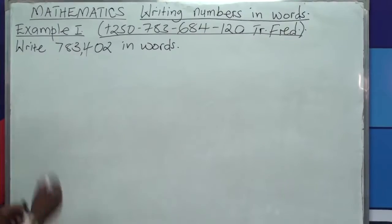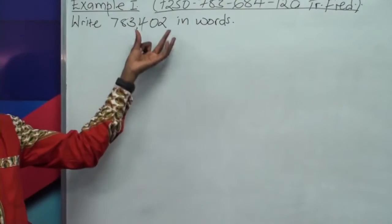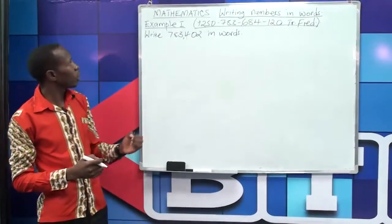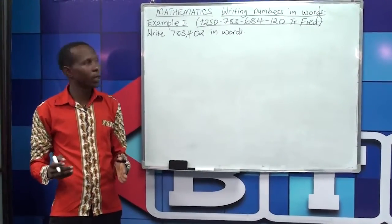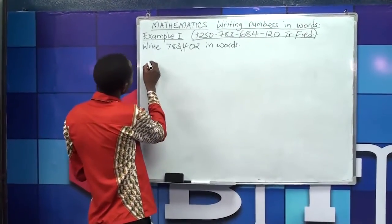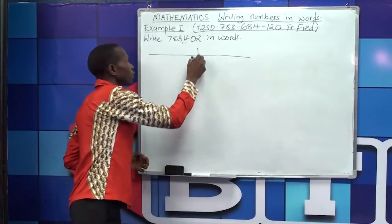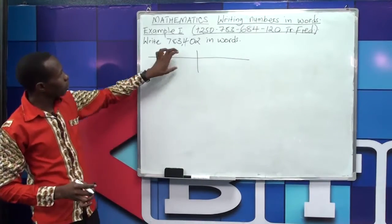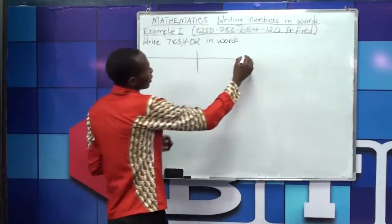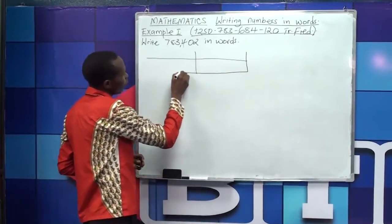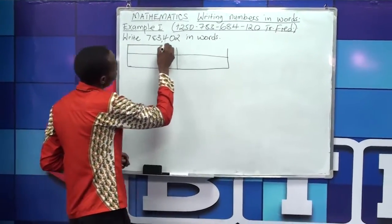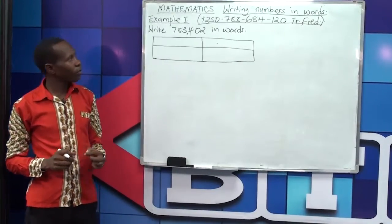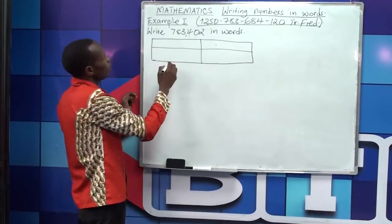First of all let's try to separate these digits. After 3 we shall count 1, 2, 3 and put a comma to separate the units. Remember here we deal with units, and when we come to this side we shall deal with thousands. So we need to arrange our number and see how we can write it in words. I'll draw a table to group this number.